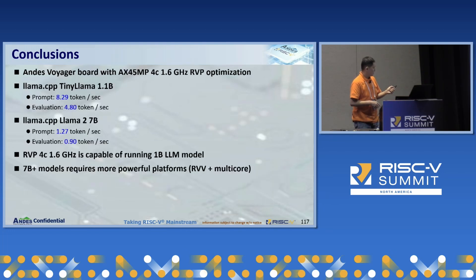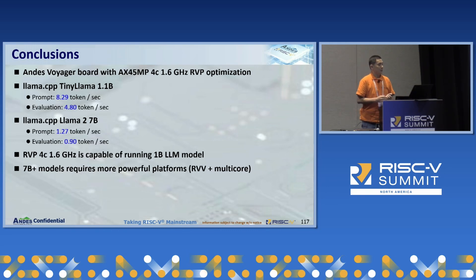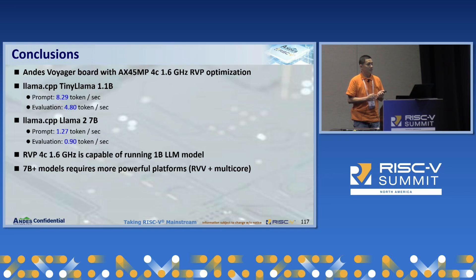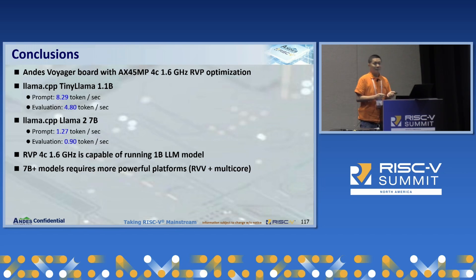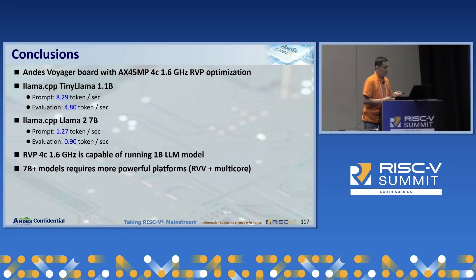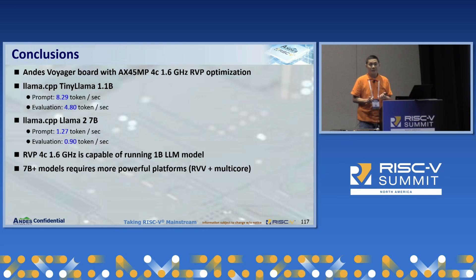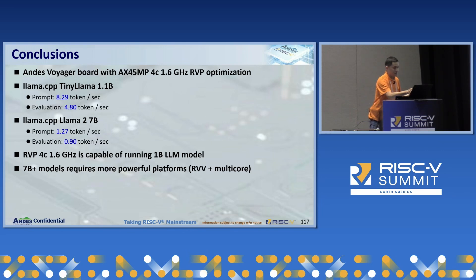Here are our conclusions. We used a real-chip development board featuring four RVP cores. When the target model was TinyLlama 1 billion parameters, we achieved a token generation speed of over 4 tokens per second. We also tested the LLaMA 2 7 billion model — because the model is much larger, token generation speed drops to around 1 token per second. The results demonstrate that four RVP cores are already capable of running 1 billion scale models. However, to run models with 7 billion parameters or more, we need more advanced platforms — for example, a multi-core RVP system with a larger VLEN size would be required.